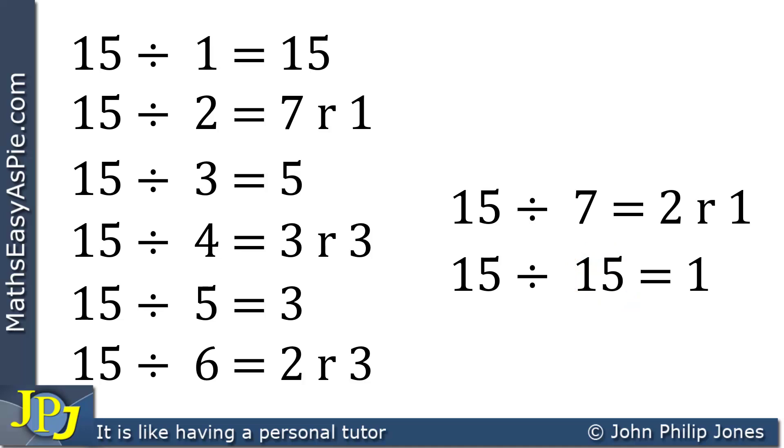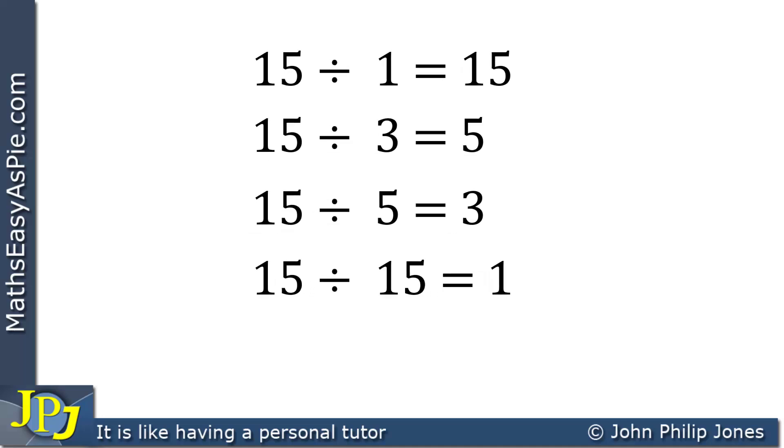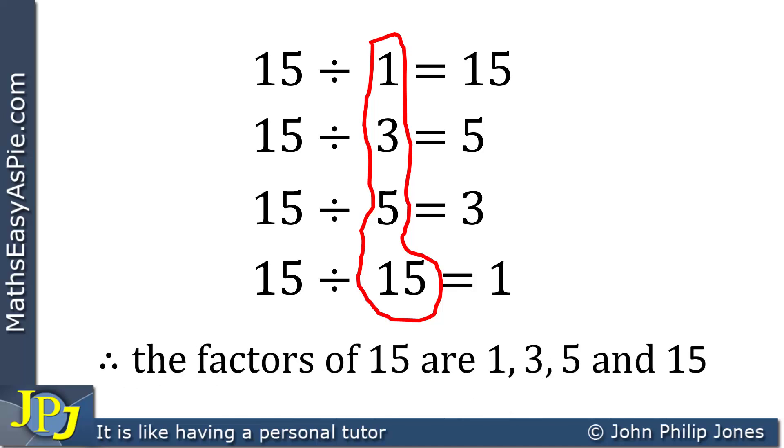I will now list all the divisions that went exactly, and you can see them appearing now. We can look at these and realize that these are the factors of 15. Therefore, the factors of 15 are 1, 3, 5, and 15.